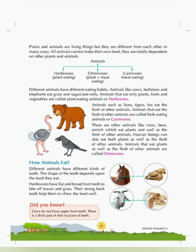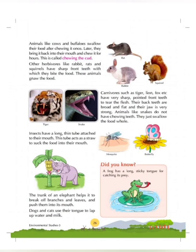Herbivores have flat and broad front teeth to bite off leaves and grass. But there are no teeth in their upper jaw. Instead, there is a thick pad of skin in the upper front part of their mouth which helps them to grab the grass, twist it and pull it into their mouth with the help of their rough tongue.